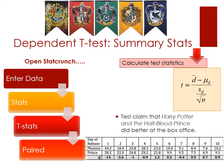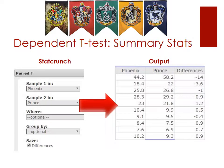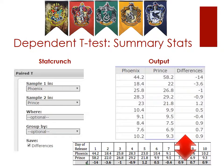First, enter your data and label your columns. Then go to Stats > T Stats > Paired, and a dialog box will appear. Set sample one to Phoenix and sample two to Prince, then click to save the differences. We're not running the hypothesis test right now — we just want our d values. Once you select Compute, you'll get an output with a column of differences that matches the d values presented earlier.